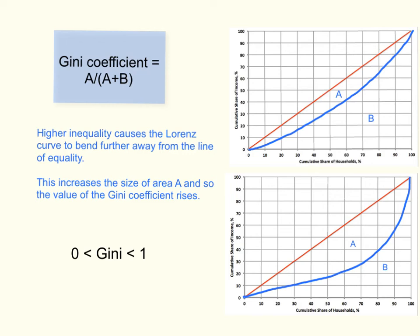The Gini coefficient falls between values of 0 and 1. If there is just a little inequality, the Lorenz curve sits just under the line of equality, and Area A is just slightly above 0. If the economy is very unequal, the Lorenz curve bends all the way down, taking up almost the entire area, and the Gini coefficient is very close to 1. So we look for a value between 0 and 1.